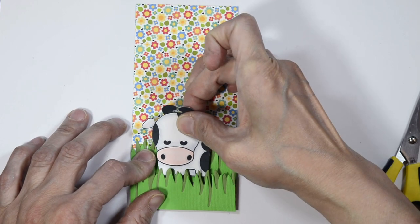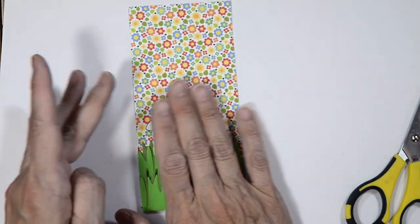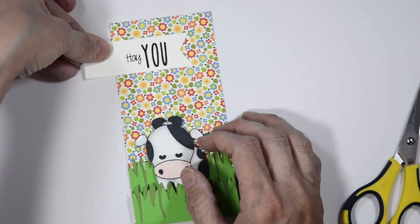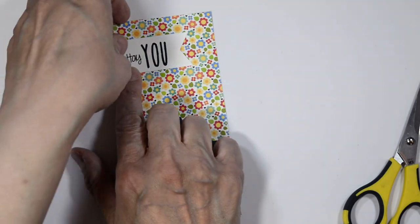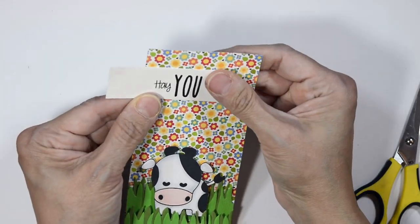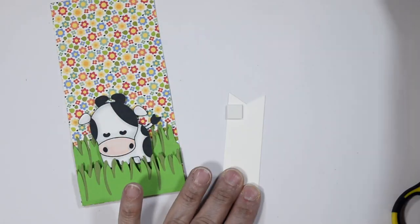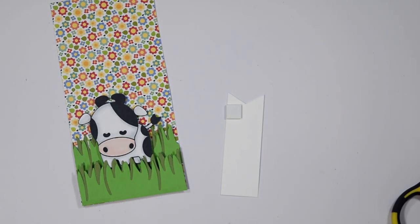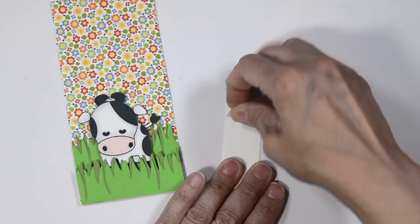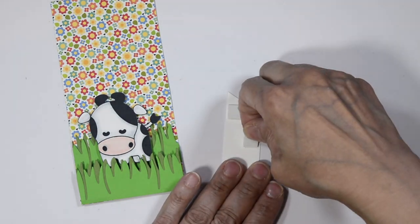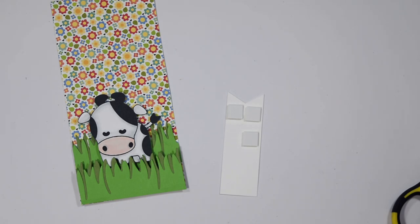Once I get my little cow tucked in here how I want it, there he is all nestled. I know where I'm going to put my sentiment which is right up here and I'm going to put some foam tabs on the back of that. I don't like removing the foam backing but I do like some dimension.